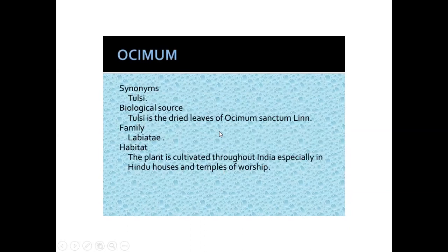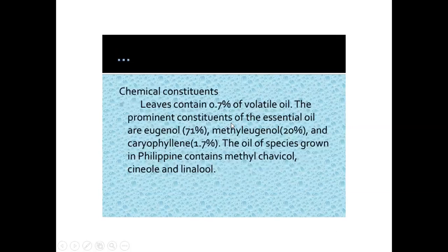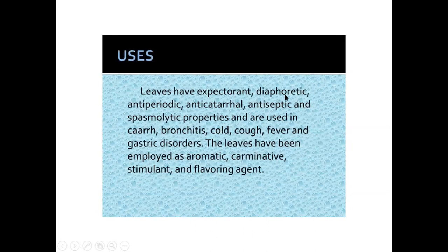Ocimum, also known as Tulsi — dried leaves of Ocimum sanctum. The plant is cultivated throughout India, especially in Hindu houses and temples due to religious importance. Chemical constituents: leaves contain 0.7% volatile oil; prominent constituents include eugenol, methyl eugenol, and caryophyllene. The oil of species grown in the Philippines contains methyl chavicol, cyanol, and linalool. Uses: expectorant, diaphoretic, anti-periodic, anticatarrhal, antiseptic, and spasmolytic properties. Used in coryza, bronchitis, cold, cough, fever, and gastric disorders. Leaves are employed as aromatic, carminative, stimulant, and flavoring agent.